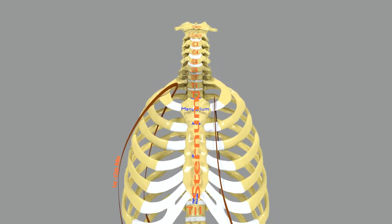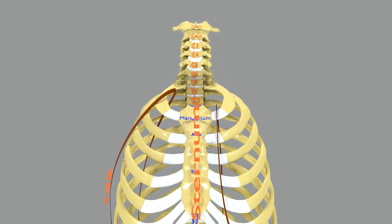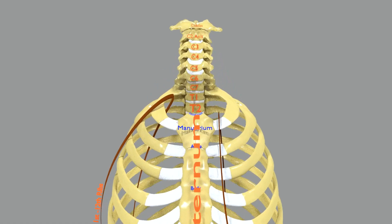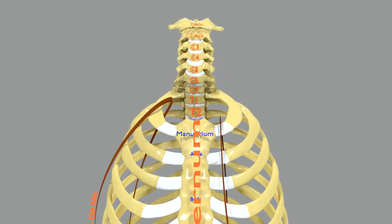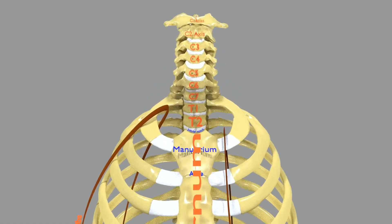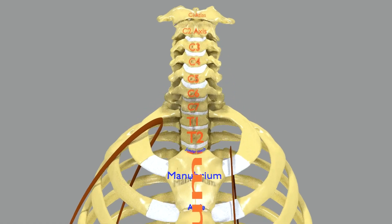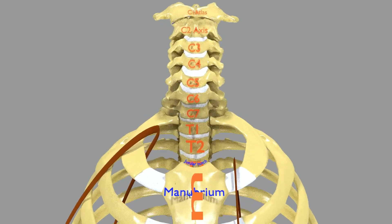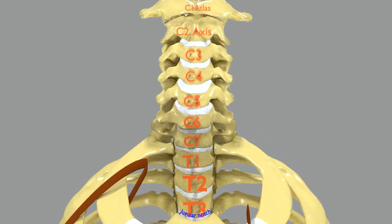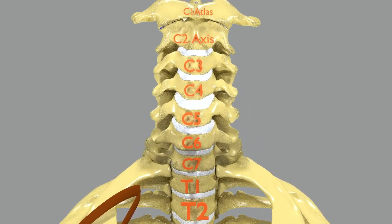The vertebral bodies are categorised into four groups from cephalic to caudal end: cervical, thoracic, lumbar, and sacrococcygeal.